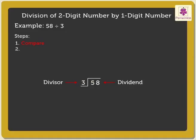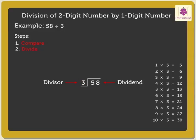Step 2 is doing the division. Here, as the divisor is 3, we use the table of 3 to find a product which is equal to or less than and nearest to the digit of the dividend, that is 5. The nearest product is 3. Hence, we write 1 above 5 in the quotient.